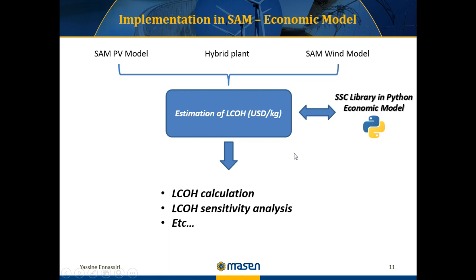For the economic model, I chose to work with Python to develop the model for calculation of hydrogen production costs from the three renewable energy sources: PV, wind, and PV-wind hybrid system. The PV and wind models are imported from the SAM SSC library to Python. The purpose of the model I've developed is not only to calculate the levelized cost of hydrogen, but also to enable other economic studies such as sensitivity analysis.